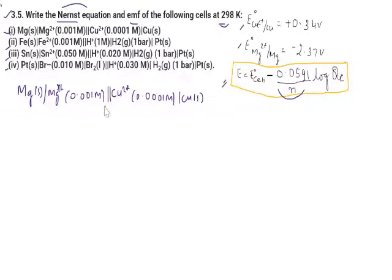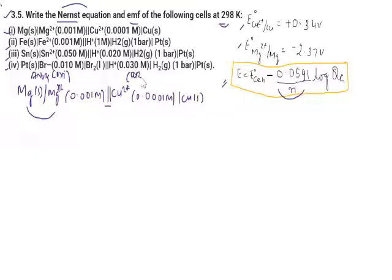In cell notation, the double line represents the salt bridge. The left-hand side shows the anode where oxidation is happening, and the right-hand side represents the cathode where reduction occurs.